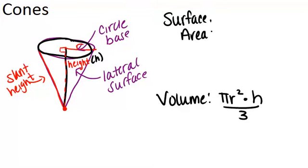Now surface area is slightly trickier. There's two surfaces that make up the cone. There's the circle that's the base and then there's this lateral surface.